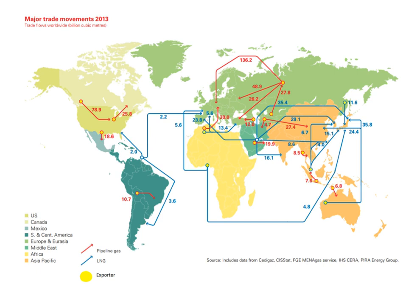When methane-rich gases are produced by the anaerobic decay of non-fossil organic matter, these are referred to as biogas or natural biogas. Sources of biogas include swamps, marshes, and landfills, as well as agricultural waste materials such as sewage sludge and manure by way of anaerobic digesters, in addition to enteric fermentation, particularly in cattle. Landfill gas is created by decomposition of waste in landfill sites. Excluding water vapor, about half of landfill gas is methane and most of the rest is carbon dioxide, with small amounts of nitrogen, oxygen, hydrogen, and variable trace amounts of hydrogen sulfide and siloxanes.